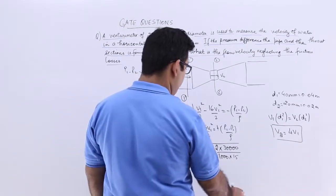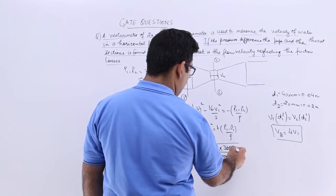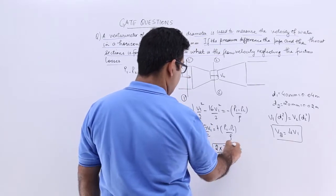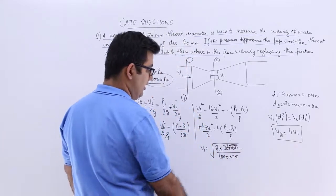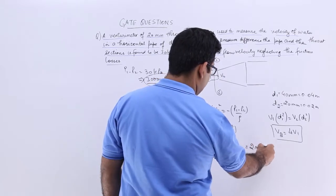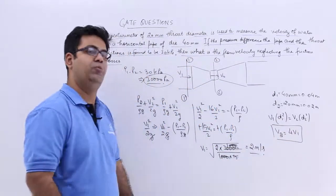So this value would be, if you strike it off you will have 2,000, then this 3 zeros can go with this 1,000, you will have 4. 4 under root will give you 2. So the velocity of flow is 2 meters per second.